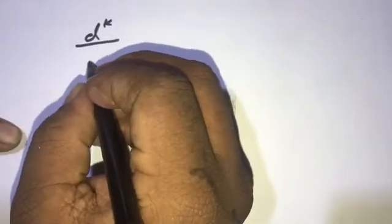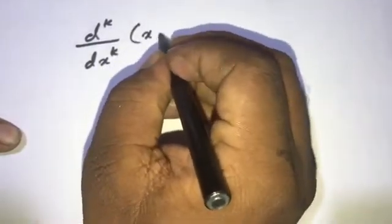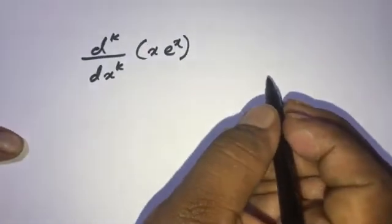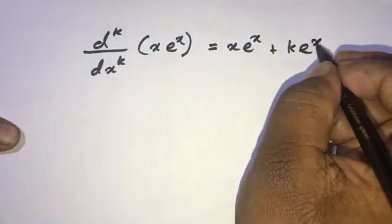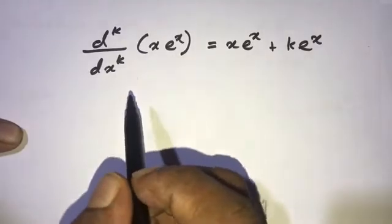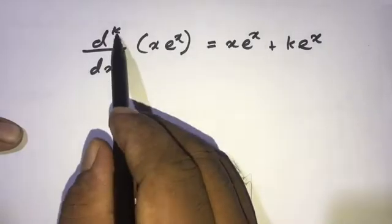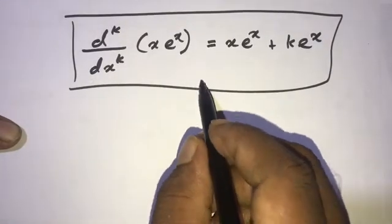Now for the next step, we assume the statement is true for n equal to K, where K is a positive integer. Substituting K for n, the equation becomes: the Kth derivative of x·eˣ equals x·eˣ plus K·eˣ. This is called the inductive hypothesis.